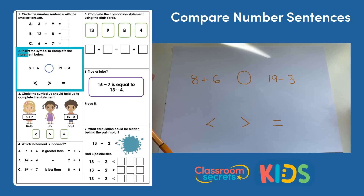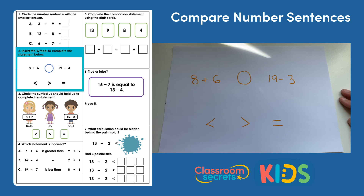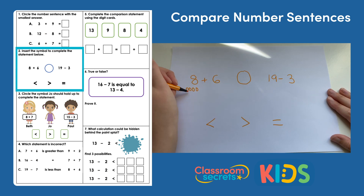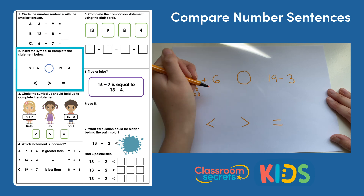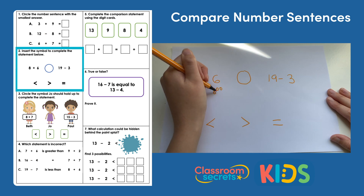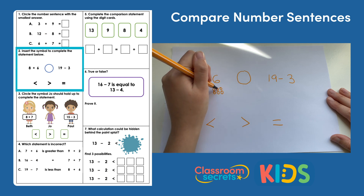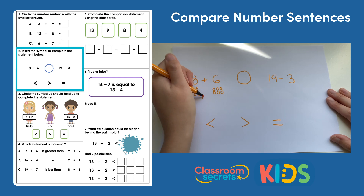Insert the symbol to complete the statement below. We've got eight add six and 19 subtract three. Again we need to find out the answer to each calculation to know which symbol to add. So first of all let's do eight add six and six more. And I'm going to count on from eight. Eight, nine, ten, eleven, twelve, thirteen, fourteen. My answer is 14.